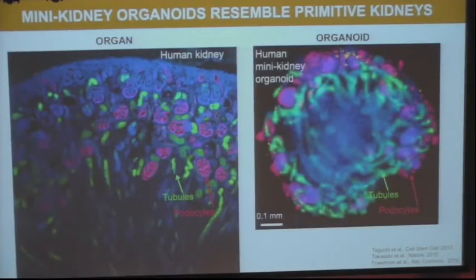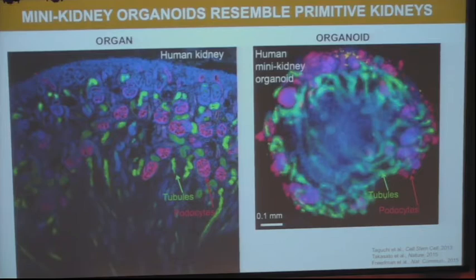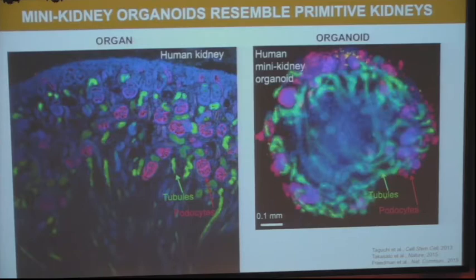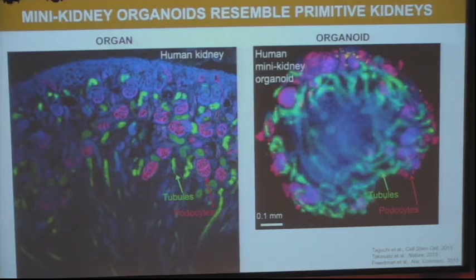We can now compare these structures — an organoid on the right versus human kidney tissue on the left. Remarkably, in both cases you have green proximal tubular cells closely opposed to red aggregates of filtering cells called podocytes. The organoid is about a millimeter in diameter. The kidney has the same cell types in very close juxtaposition, and the overall architecture is conserved between the organoid and the organ. It's still remarkable to think that this structure was once a skin cell.